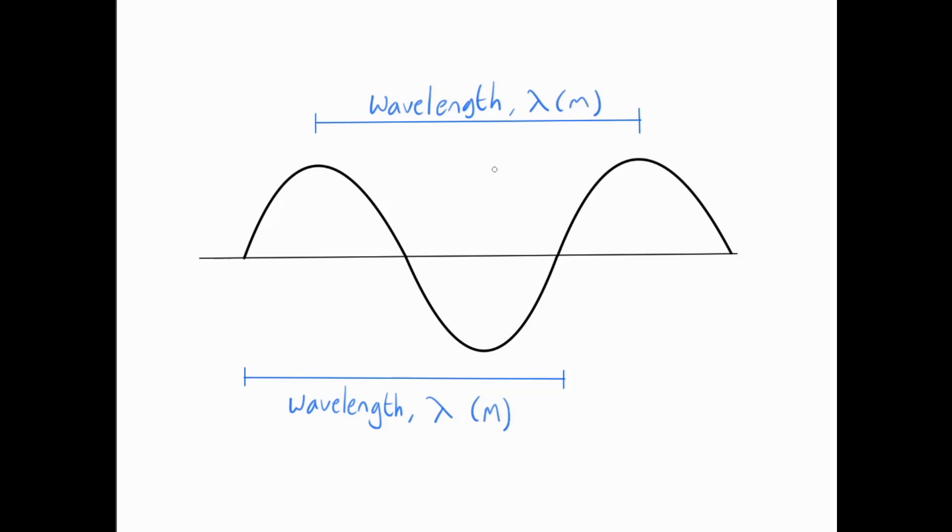Now we have to define the term wavelength. Wavelength is simply, as the name suggests, it is the length of one wave. It's defined as the distance between a point on one wave to the same point on the next wave. Here I've gone from the peak of the wave or the crest of the wave to the next peak. Here I've also drawn a wavelength but I've gone from the start of the wave here all the way to the start of it again over there. They are exactly the same value.